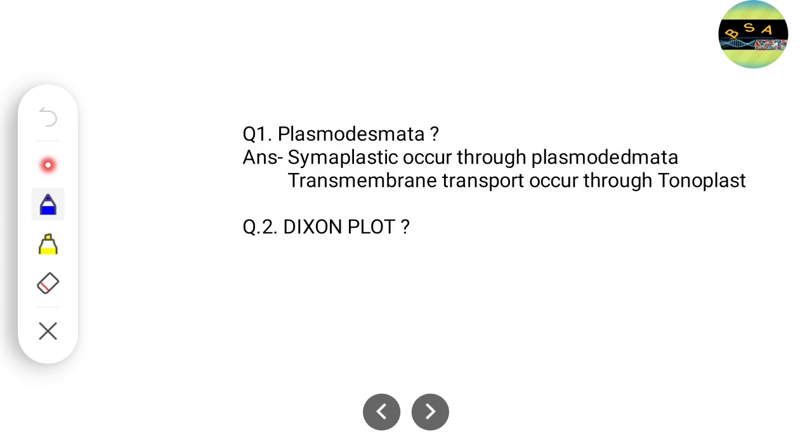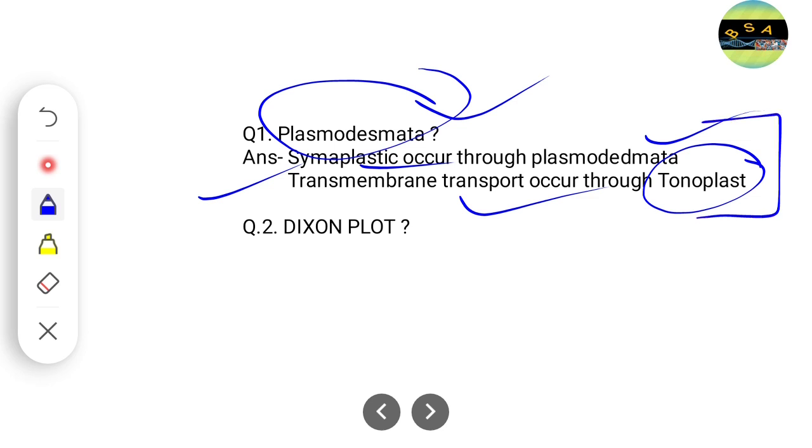One question came about plasmodesmata. Two options should be correct: symplast occurs through plasmodesmata, which is the connecting region, and transmembrane transport occurs through tonoplast. These should be the correct options. If you remember the question, you'll know this is the correct answer.